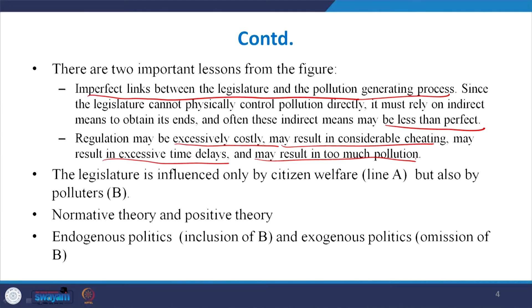Legislature is influenced by the citizen welfare, represented by line A in the figure, but it is also influenced by polluters, shown by line B in the graph. Line A represents the normative theory — the public interest theory — and line B represents positive theory, which is the interest group theory. So you can also relate these two theories of regulation, interest group theory and public interest theory, while analyzing the political economy model of regulation.